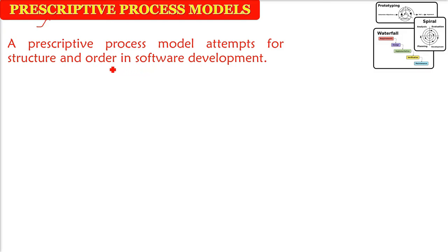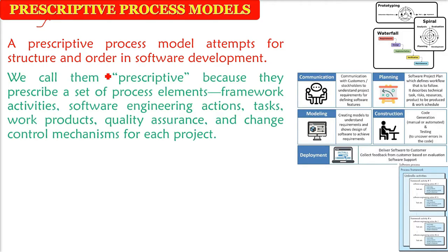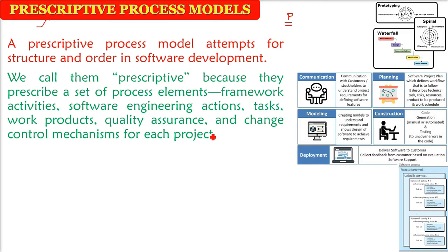There are multiple process models we are going to discuss in this prescriptive process model. We are calling it prescriptive because it is prescribing you what you have to do. It will tell you the set of process elements — like the doctor telling you to take pantoprazole and domperidone one hour before breakfast if you have acidity. This is the order, structure, and all the process elements being prescribed: the framework activities, actions, tasks, work products, quality assurance, and how you are going to control change.